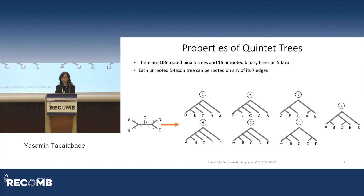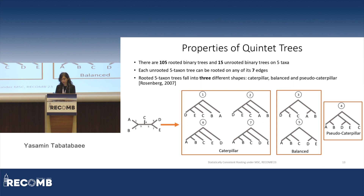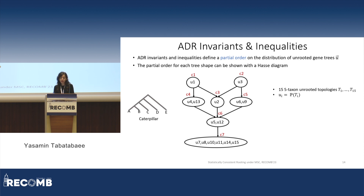To get started with the theory, we first need to look into the properties of quintet or five-leaf trees. On five taxa, there are 105 rooted binary trees and 15 unrooted binary trees. Each unrooted five-taxon tree can be rooted on any of its seven edges. For example, on the left we can see an unrooted five-taxon tree where its edges are marked with numbers, and rooting it on one of these edges results in one of the trees on the right. Generally, the topology of rooted five-taxon trees can have three different shapes, called caterpillar, balanced, and pseudocaterpillar, as shown in this figure.